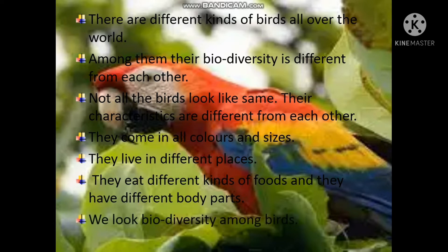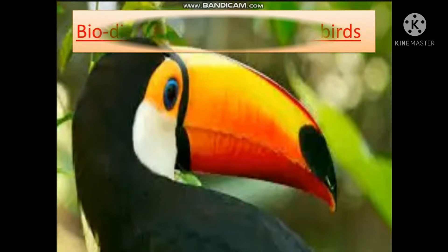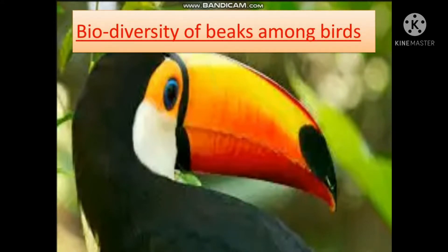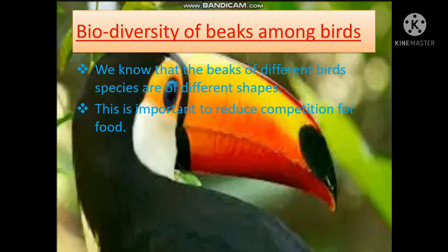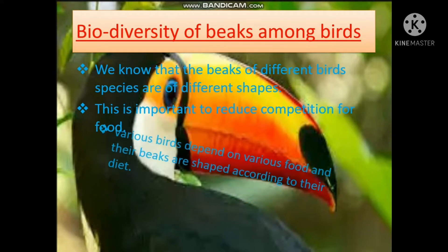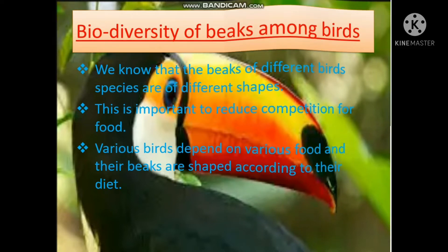Biodiversity of beaks among birds. We know that the beaks of different bird species are of different shapes. This is important to reduce the competition for food. Various birds depend on various food and their beaks are shaped according to their diet.